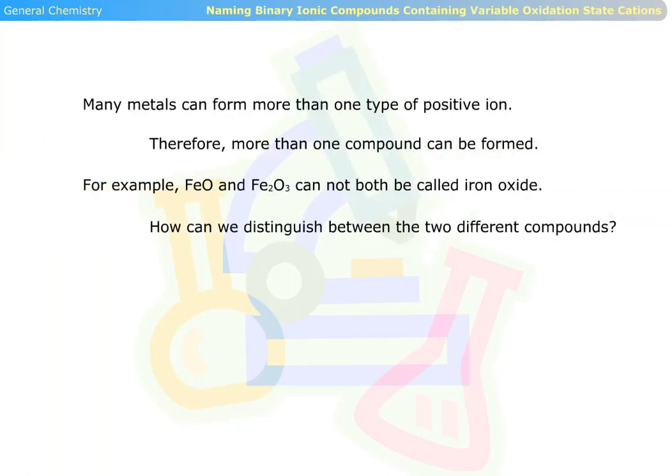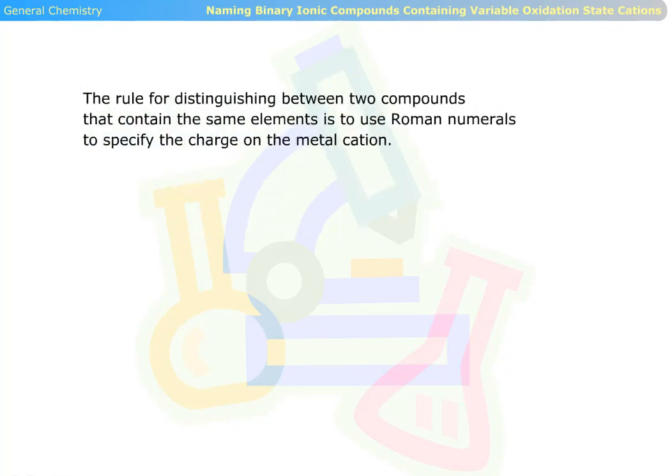Many metals can form more than one type of positive ion. Therefore, more than one compound can be formed. For example, FeO and Fe2O3 cannot both be called iron oxide. How can we distinguish between the two different compounds? The rule for distinguishing between two compounds that contain the same elements is to use Roman numerals to specify the charge on the metal cation.